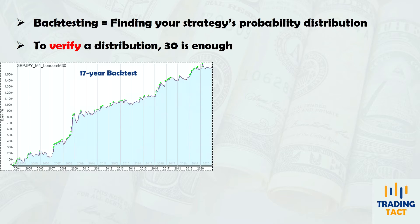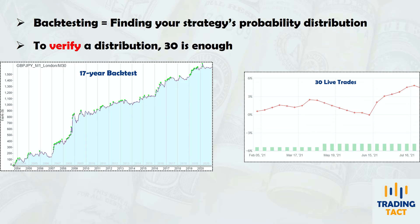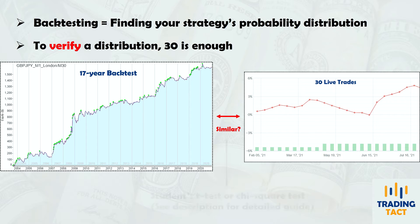Let's say you have a long-term strategy backtest containing a few hundred trades, and you start trading the strategy live for a few months, getting a sample of 30 live trades. With this sample size of 30, you can get a good estimate of whether your live results are in line with your historical performance. To achieve this, you can run a data comparison using a Student's t-test or a chi-square test. But if it's your first attempt at getting an estimate of your historical performance, 30 trades is insufficient.